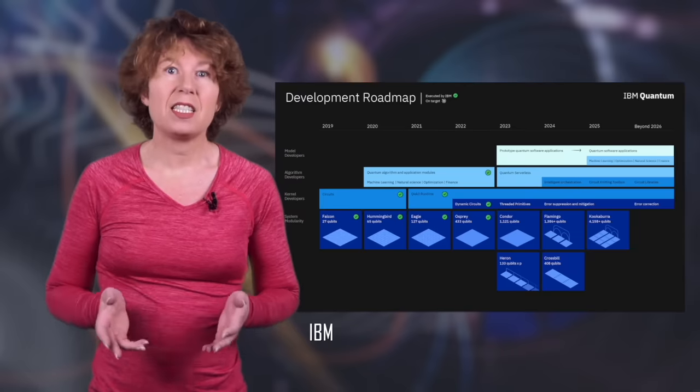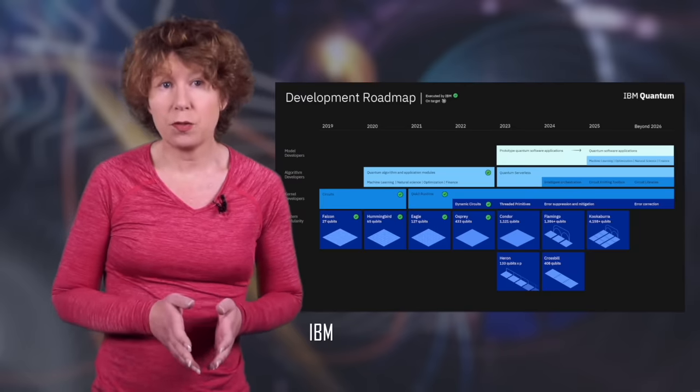IBM also has a roadmap according to which they want to reach more than one thousand qubits later this year. They'll almost certainly get this done. But it's one thing to lump qubits together on a chip, it's another thing entirely to get it to do something useful. That's why I'm very skeptical that quantum computing will have much of an impact in the next decades. It's because I believe it'll turn out to be incredibly difficult to control the errors, and when the problem starts eating up too much money, companies will drop the ball.